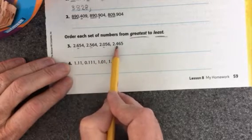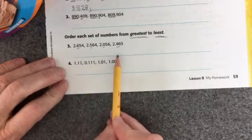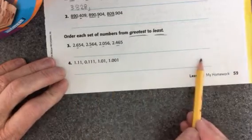I have a 6, a 5, a 0, and a 4. So I'm going to choose the number that is the greatest, and that will come first. And then the next number, and the next number, and so on.